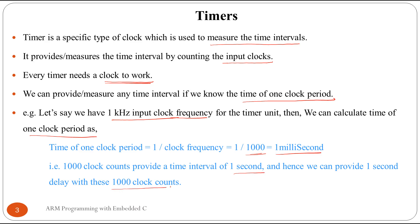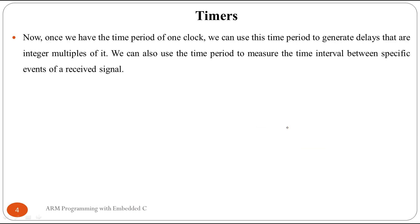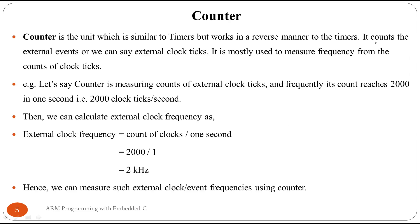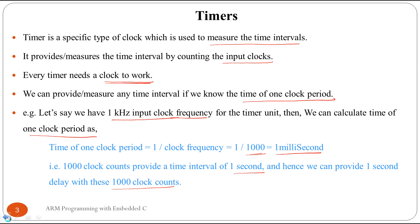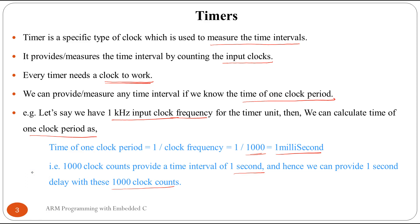Once we have the time period of one clock cycle, we can generate delays that are integer multiples of it, and also use it to measure the time interval between specific events. For example, if one clock period is one millisecond, executing 10 clock periods gives a 10 millisecond delay.